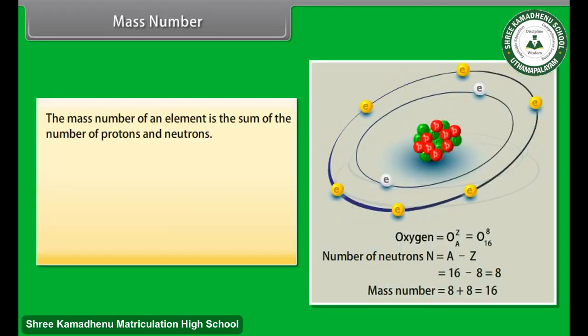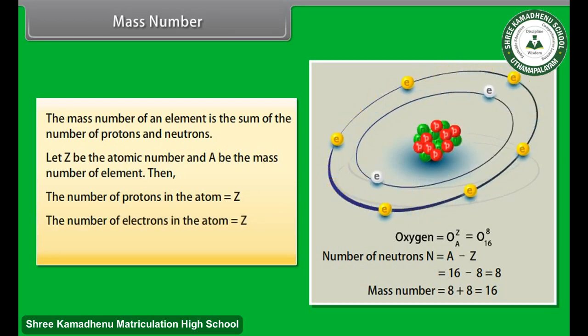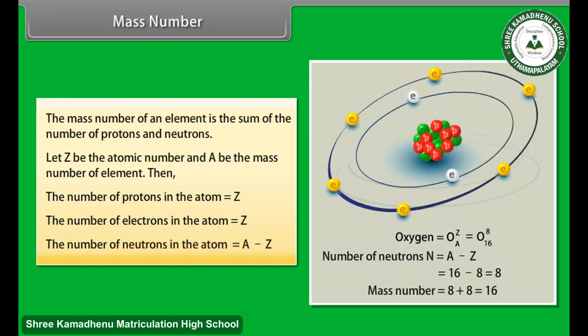Mass number. The mass number of an element is the sum of the number of protons and neutrons. Let Z be the atomic number, and A be the mass number of element. Then the number of protons in the atom is equal to Z. The number of electrons in the atom is equal to Z. The number of neutrons in the atom is equal to A minus Z.